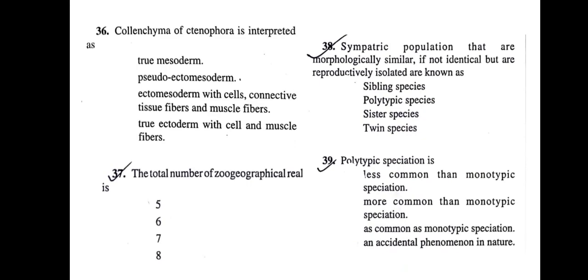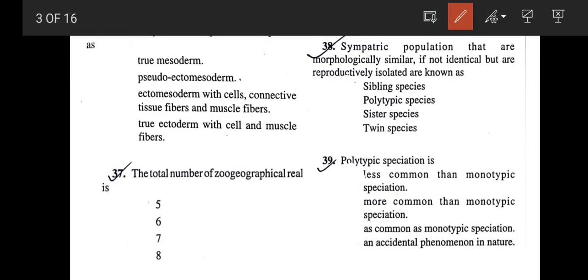Question 36 asks: Colenchyma of Ctenophora is interpreted as ectomesoderm with cells, connective tissue and muscle fibers. The correct answer would be option C. Question 37: The total number of geographical realms is 6. Question 38: Sympathic populations that are morphologically similar if not identical but are reproductively isolated are known as sibling species.